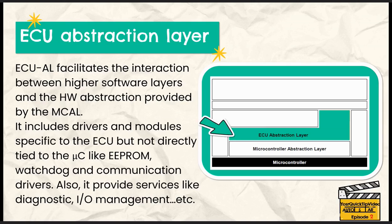The ECU abstraction layer acts as a bridge between the software and hardware. This layer offers APIs for access to peripherals and devices, regardless of their location and their connection to the microcontroller. It includes drivers like EEPROM, which stores important data even when the car is off, and watchdogs, which monitor the system to keep it running properly. It also provides diagnostic and input-output management, which handle input and output signals, ensuring everything communicates effectively.